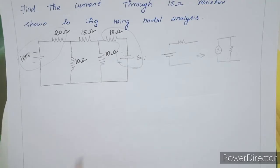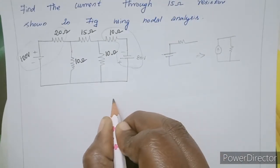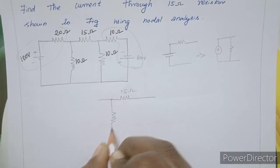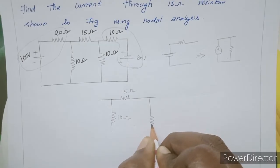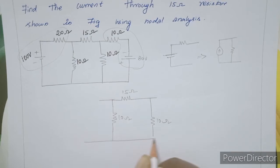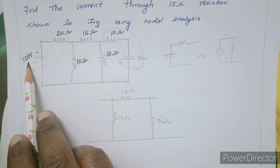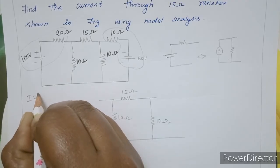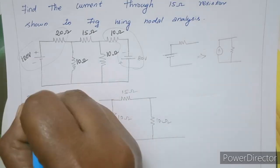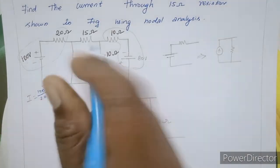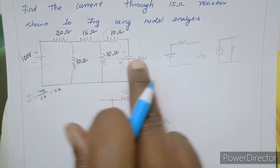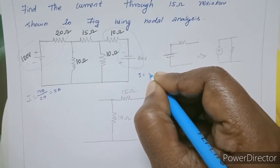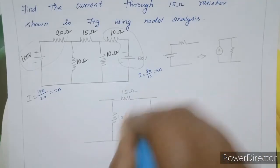After balancing the resistance, we have 15 ohm and 10 ohm elements in the circuit. Now we have a voltage source in series with resistance, which we convert to a current source. The current I equals V divided by R: 100 divided by 20 gives 5 ampere. We now have a 5 ampere current source. Similarly, 80 divided by 10 gives 8 ampere.